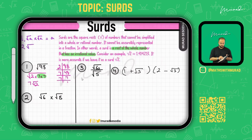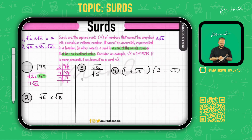Rule two: whenever you have two different numbers under square roots being multiplied — for example √2 × √3 — you combine them under one square root to get √6. Rule three: whenever you have √a divided by √b, you can write it as the square root of (a divided by b), placing a collective square root over both.